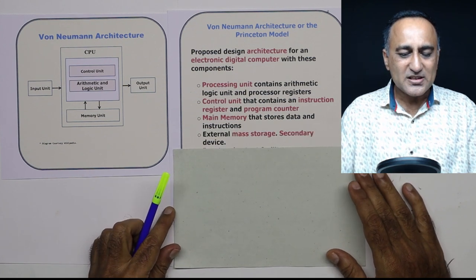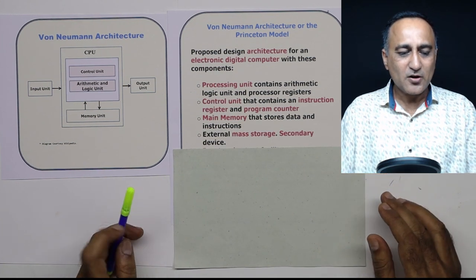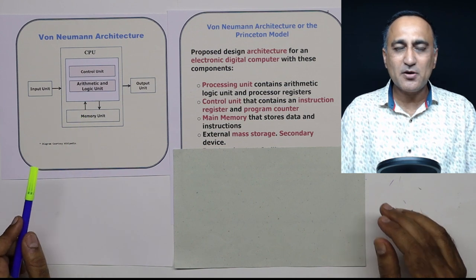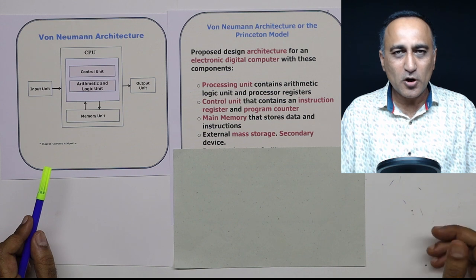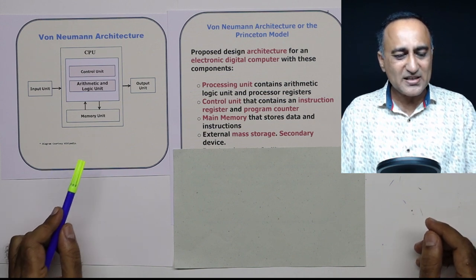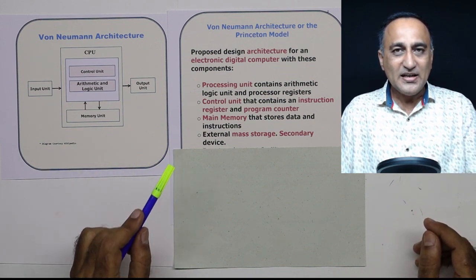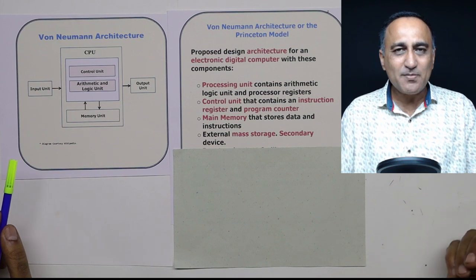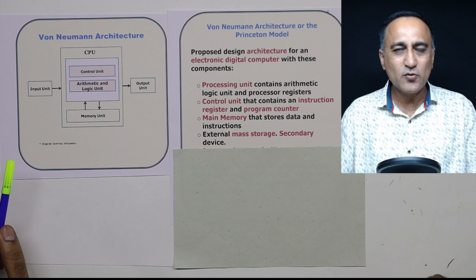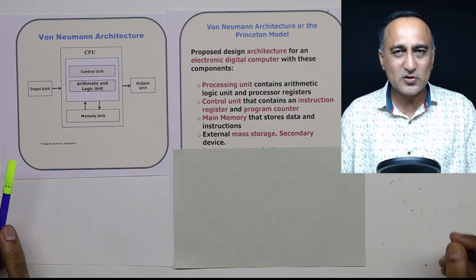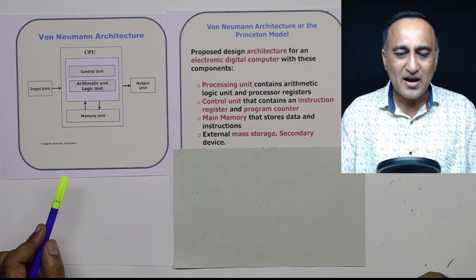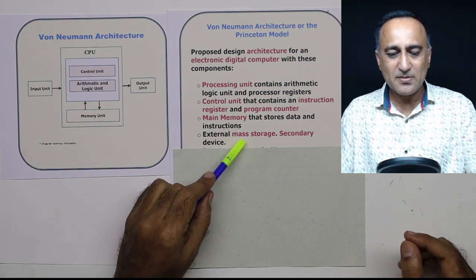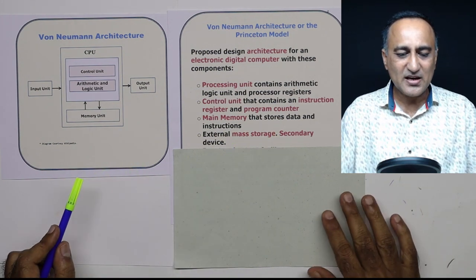What von Neumann said is that not everything can be in the main memory, because when the power is switched off, all instructions and data are going to be lost from main memory. So he suggested it shall have an external memory which does not lose its contents even if the power is switched off. In modern computers, that happens to be your hard disk, known as the mass storage or secondary device.